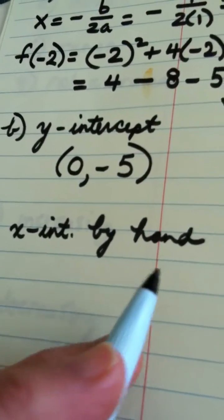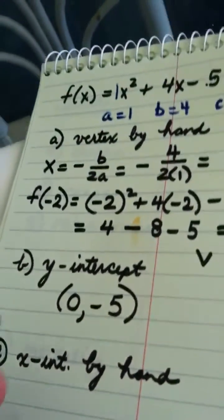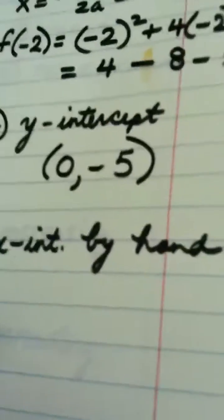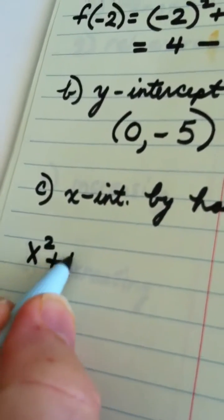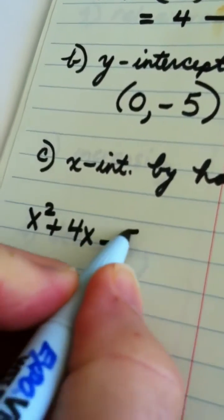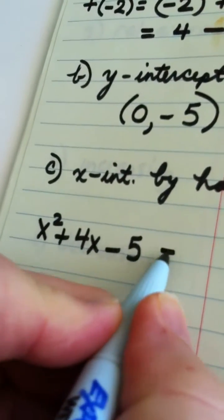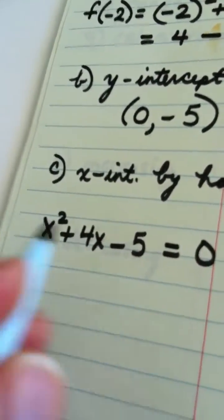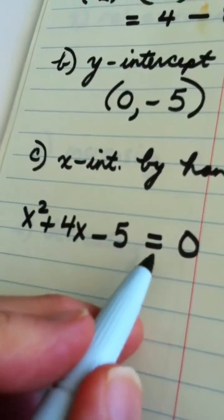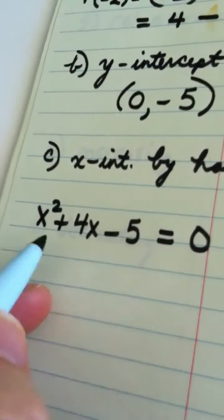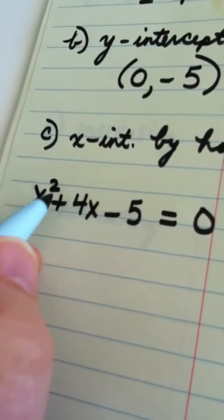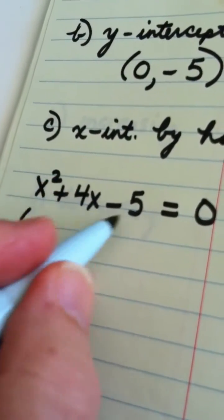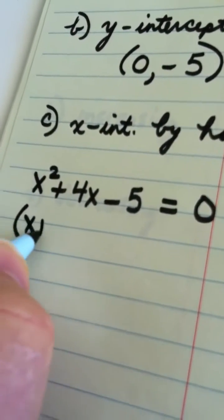Well if there are x-intercepts, the way you're going to find them is you take the function which is x squared plus 4x minus 5 and you find its zeros. In other words, you set the function, the y value, equal to 0. This equation factors, the algebraic part factors as x plus 5 quantity and then quantity x minus 1.